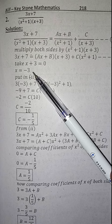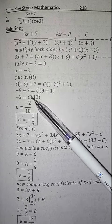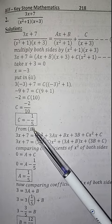we get value of x which is minus 3. Now put value of x is equal to minus 3 in equation 2, we get value of C which is minus 1 over 5.